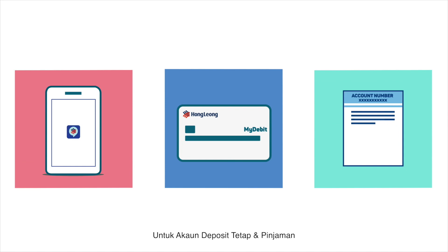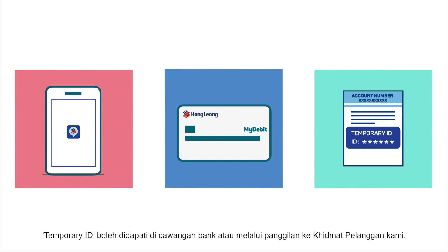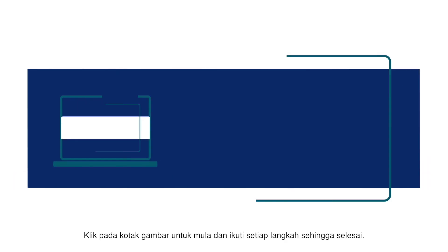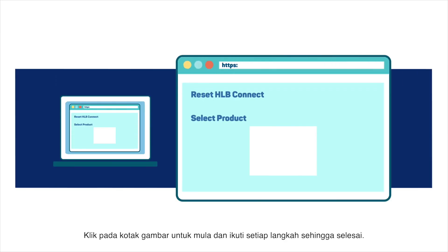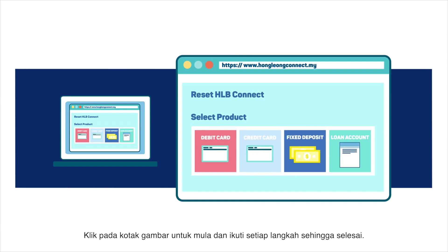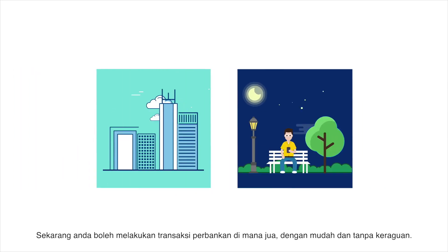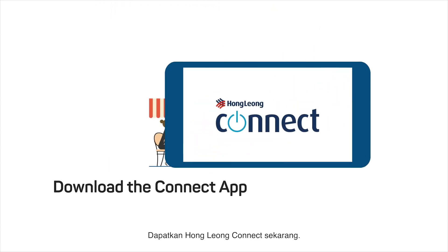For fixed deposit and loan account, you'll need your account number and temporary ID. The temporary ID can be obtained from the branch or by calling our customer service. Click on the image box to begin and follow the step-by-step instructions till the end. Now you can do your banking anywhere, hassle-free and worry-free. Get Hongliang Connect now!